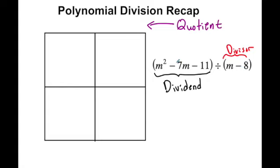Just for some quick vocabulary so you're aware: the dividend is always the thing you're dividing into. The divisor is what you're dividing by, and the quotient is basically the answer that you get. Sometimes you get something left over, and in that case the remainder is part of that.